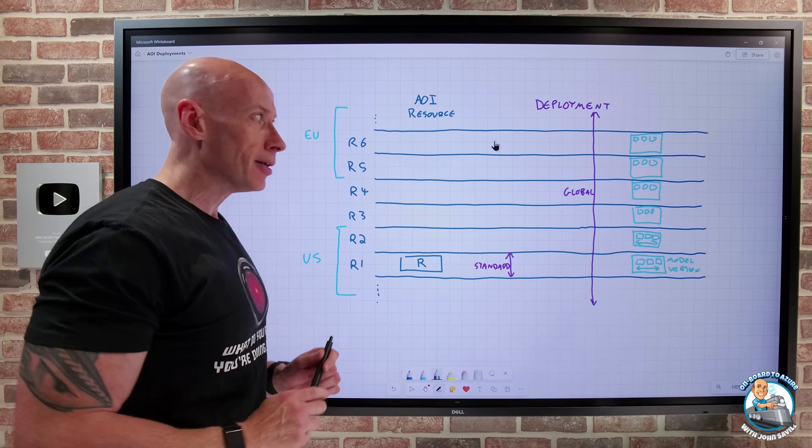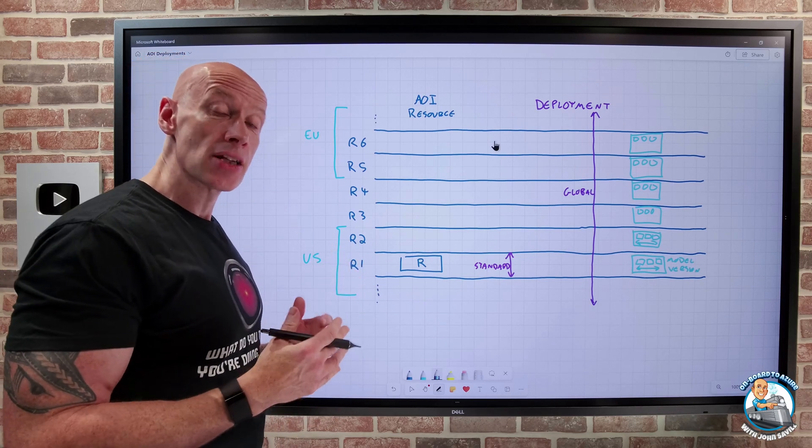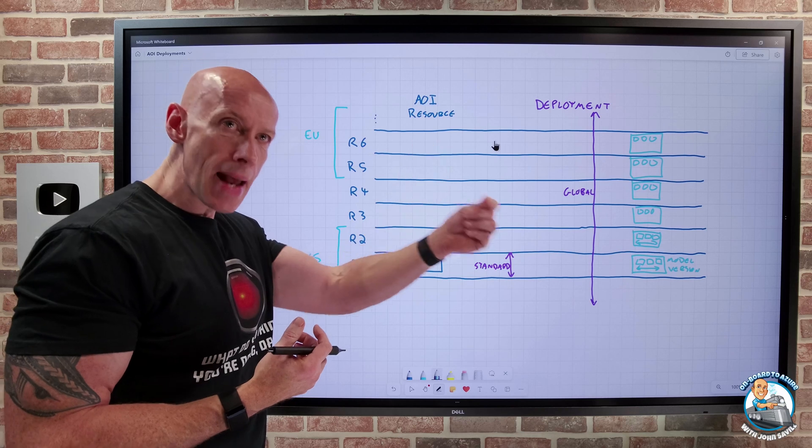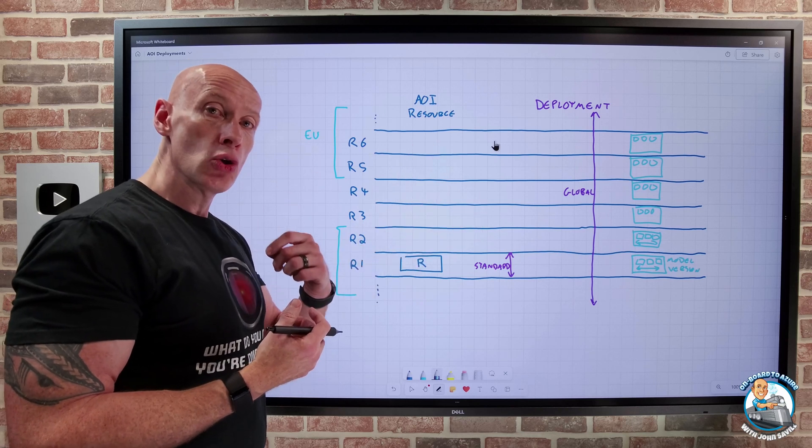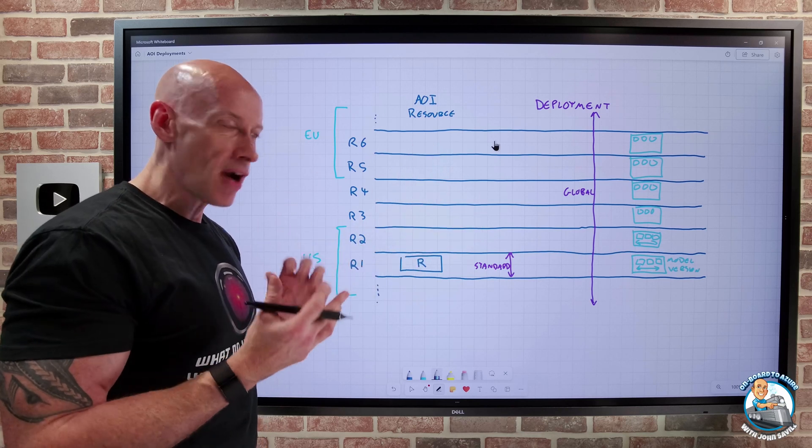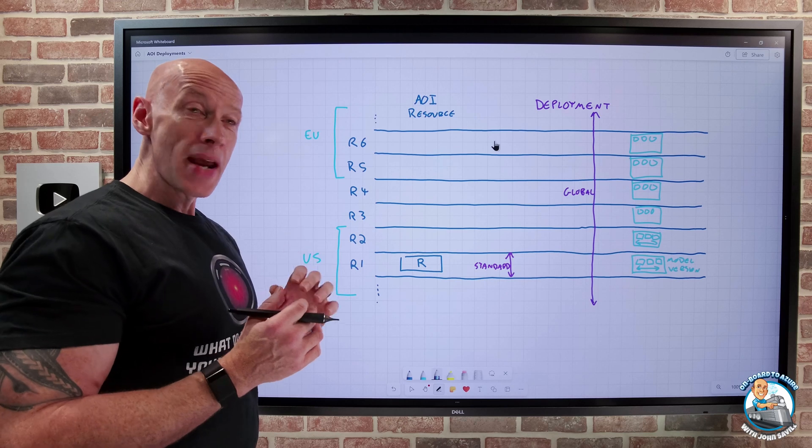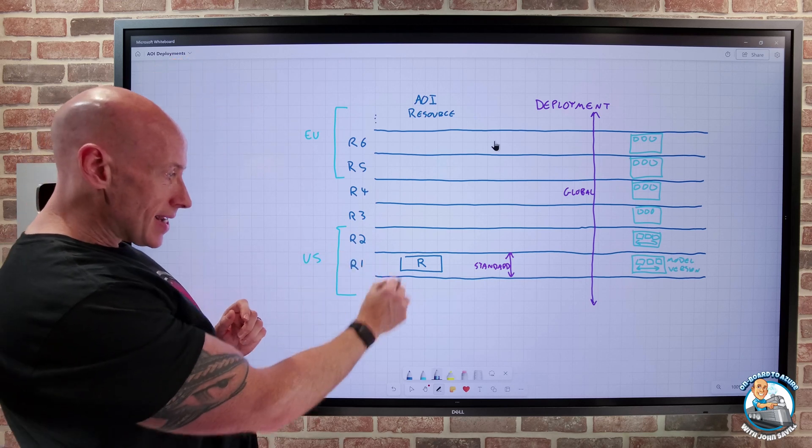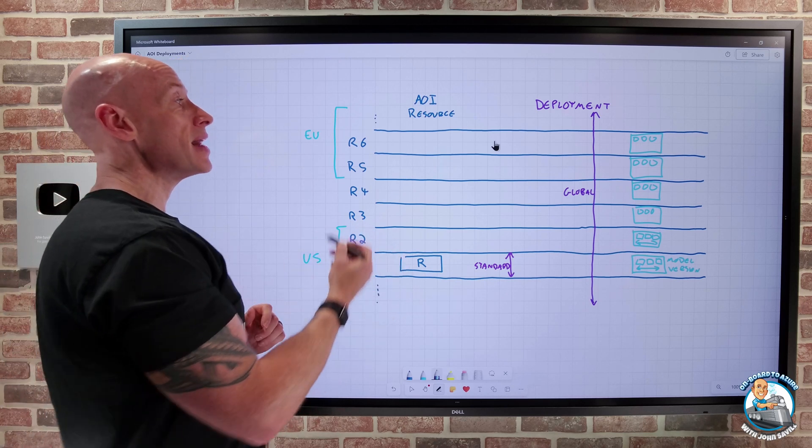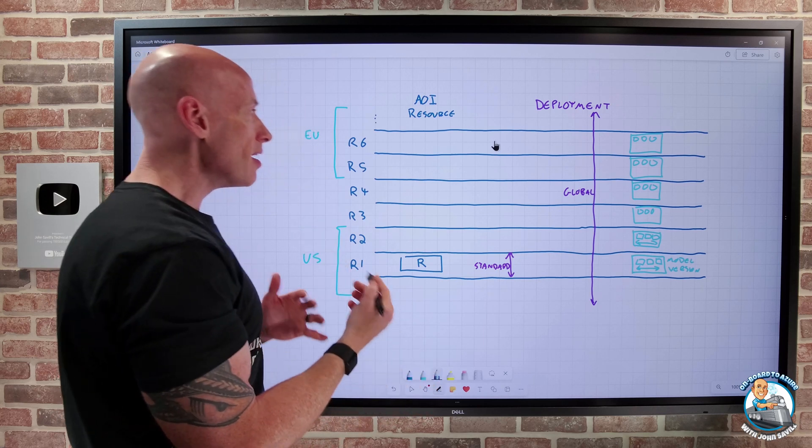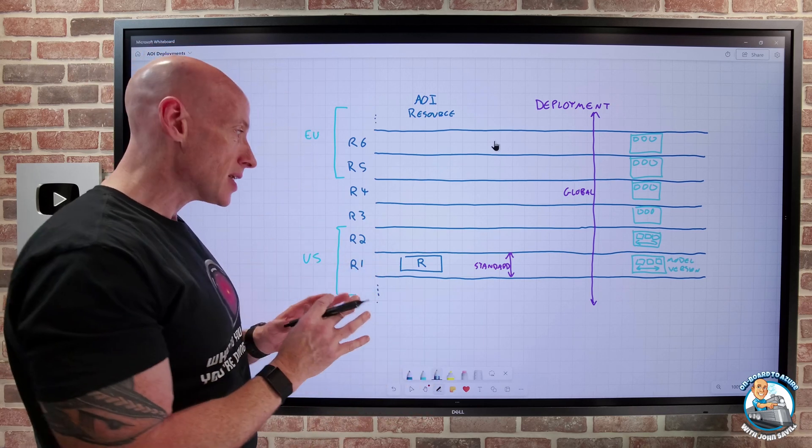The challenge though here was if I had some kind of data sovereignty requirement. I can't let my prompt go to an instance outside of my geographical boundary. And there are many regions, for example, in the United States, there's some set of regions, there's many regions in the European Union. So what they're introducing is two data zones.